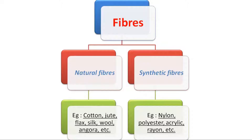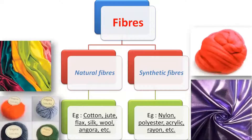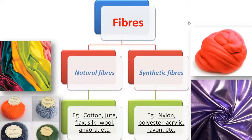Natural fibers, as the name suggests, are obtained from nature — specifically from plants and animals. Synthetic fibers are obtained using certain chemical substances. Examples of natural fibers include cotton, jute, flax, silk, wool, and angora wool. Examples of synthetic fibers are nylon, polyester, acrylic, rayon, and so on. In Class 6, you learned about plant fibers like cotton and jute. Now in Class 7, we will mainly focus on animal fibers — that is, wool and silk — and how they are obtained and processed into fabrics.